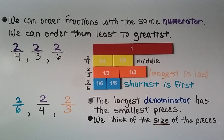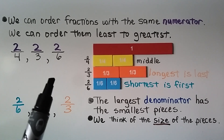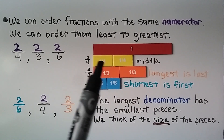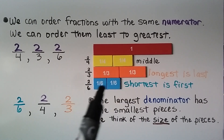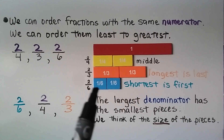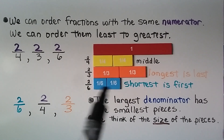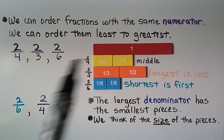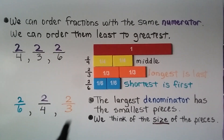We can order fractions with the same numerator from least to greatest. Here we have 2-fourths, 2-thirds, and 2-sixths. Using fraction strips: here's one whole (the red one), two-fourths is two of the yellow pieces, two-thirds would be two of the orange pieces, and two-sixths would be two of the blue pieces. The blue ones are the shortest, so two-sixths goes first. The yellow ones are the middle, so two-fourths is next, and the longest fraction bar is the two-thirds, so that goes last.